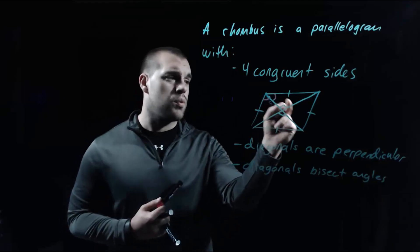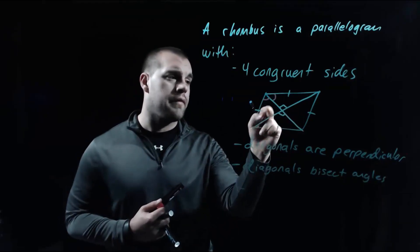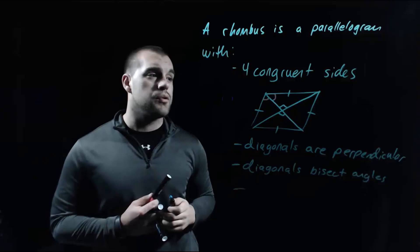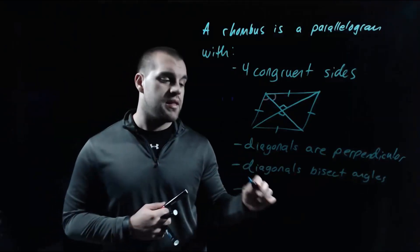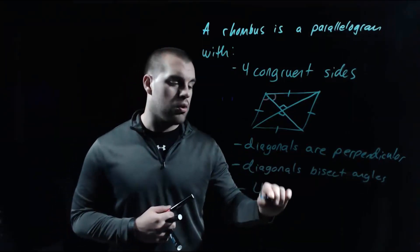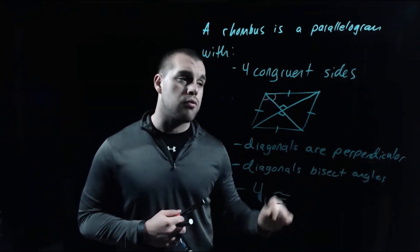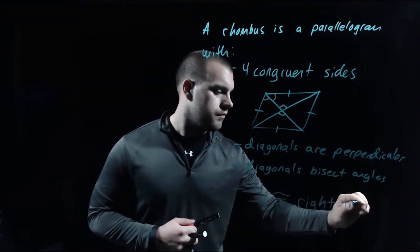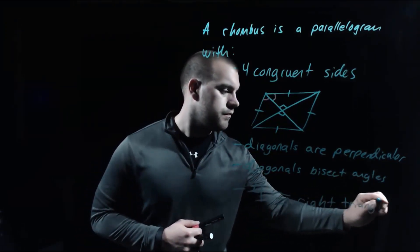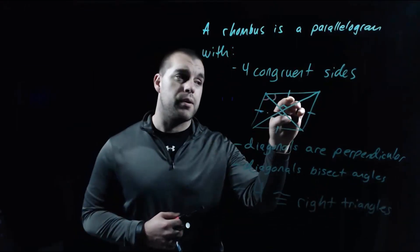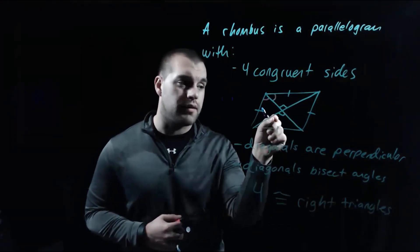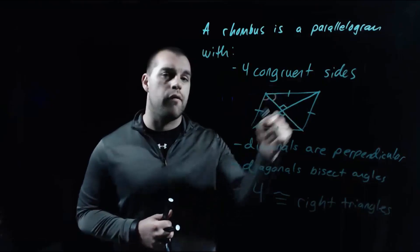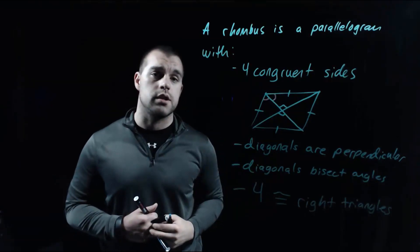Our last property is that looking at all of the different triangles created within our rhombus, those are all going to be congruent. So we're going to say that we have four congruent right triangles within our rhombus. This triangle on top is congruent to the triangle on the right, the triangle on the bottom, and the triangle on the left — all four of those triangles have to be congruent to each other.